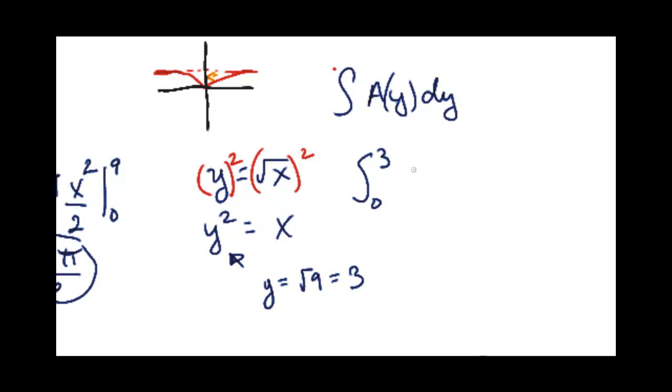Now we're going to plug in our function with the pi radius squared formula. The radius we said was y squared, and that needs to be squared from the formula, dy.